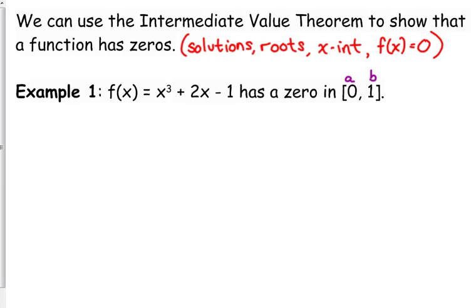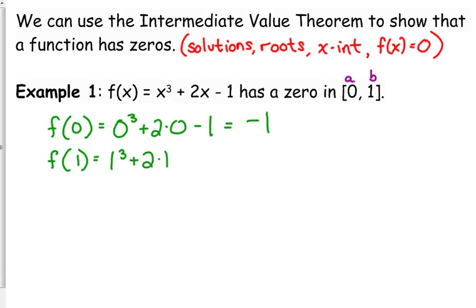So, on this interval, we need to find out what are the values of zero and one? What is f of zero? Zero cubed plus two times zero minus one. That is equal to negative one. f of one. Plug that in. That gives us one plus two minus one. So, that is equal to two. So, one side of our interval was negative. One side of our interval was positive. Therefore, it does have a zero in that interval.